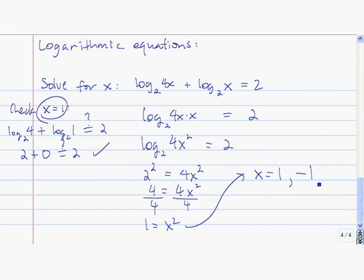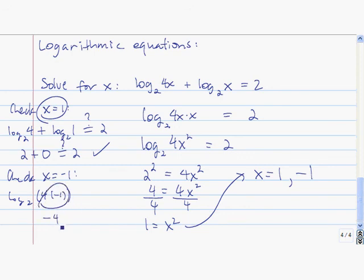Now we check x equals negative 1. We have log base 2 of 4 times negative 1, but 4 times negative 1 is negative 4, and I cannot take log base 2 of negative 4. So x equals negative 1 is an extraneous solution.